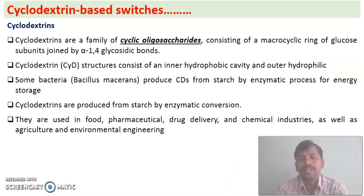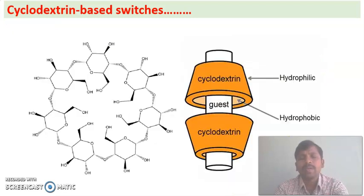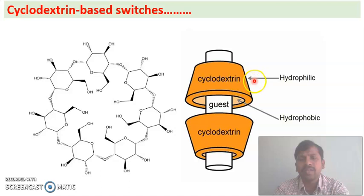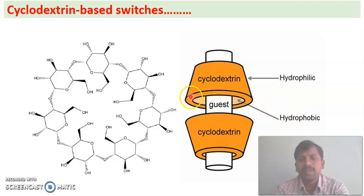Cyclodextrins exhibit a dual nature: on the outside they exhibit hydrophilic nature, and on the inside they exhibit hydrophobic nature. This is a peculiar behavior of cyclodextrins. They also have a truncated cone shape.